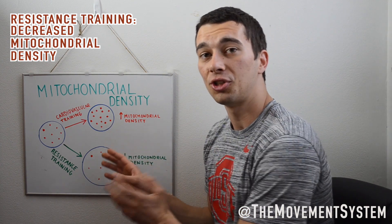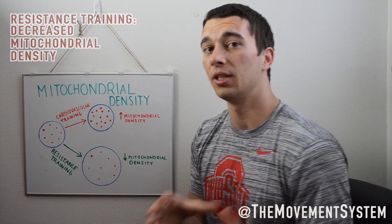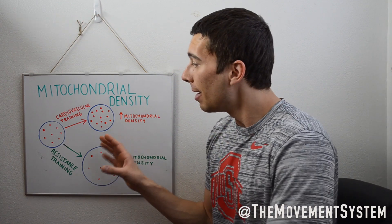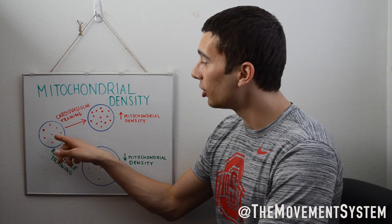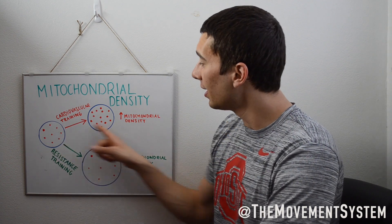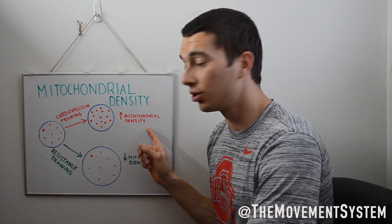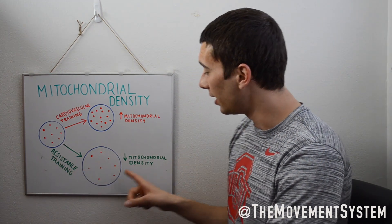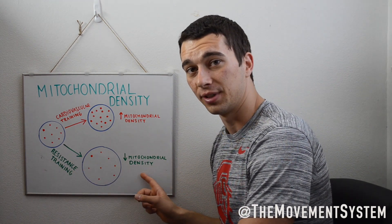The reality is that there's going to be some combination, usually in mixed type training, where you're doing cardio and resistance training. But purely from a physiological standpoint, cardiovascular training leads to increased mitochondrial density, whereas resistance training leads to decreased mitochondrial density.